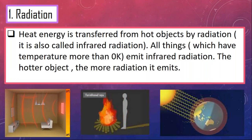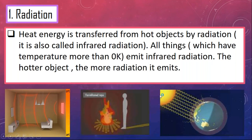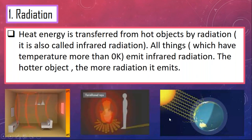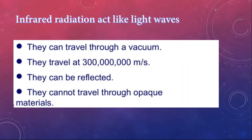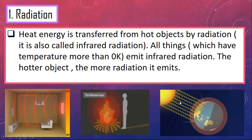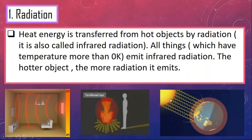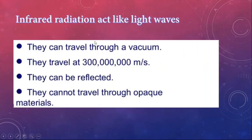In the animation, you can see infrared radiation coming from the sun to the earth — some is absorbed, some is reflected. It acts like a light wave. Infrared radiation is also a wave. Between the sun and earth there is a vacuum — no particles — and infrared radiation travels through this vacuum to reach the earth. That's why infrared radiation and light waves can both travel through a vacuum.